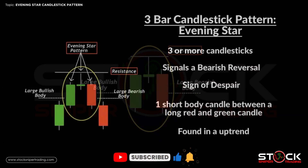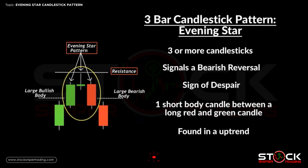The evening star candlestick pattern consists of three or more candlesticks. It signals a bearish reversal from a bullish uptrend. It is a sign of despair in a bullish market. It is one short-body candle between a long red and green candle, and it is found in an uptrend at a level of resistance.